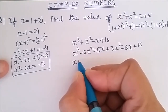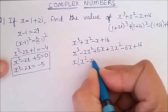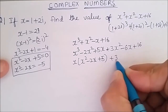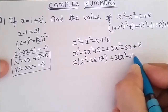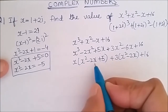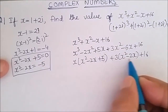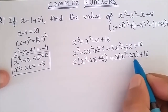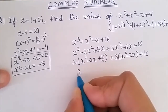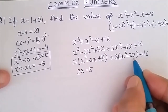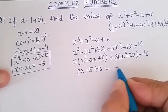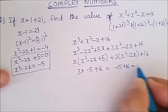Taking x common, I get x times (x square minus 2x plus 5), and for the rest of the polynomial taking 3 common gives 3 times (x square minus 2x plus 16). Since x square minus 2x plus 5 equals 0, that term becomes 0, and I am left with 3 times (x square minus 2x) plus 16. Substituting x square minus 2x equals minus 5: this is 3 times minus 5 plus 16, which is minus 15 plus 16. So the value of this polynomial is 1.